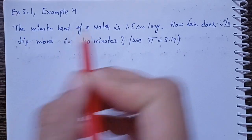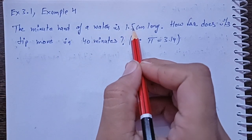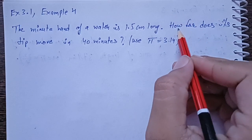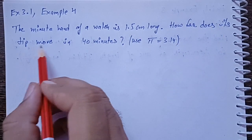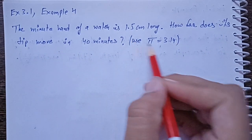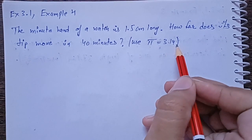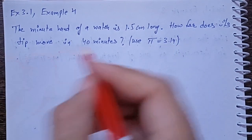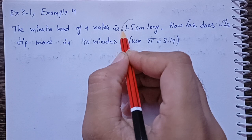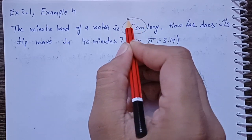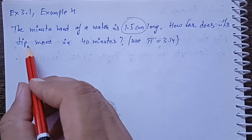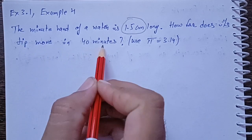The minute hand of a watch is 1.5 cm long. How far does its tip move in 40 minutes? Use pi value is 3.14. We have a watch. The minute hand is 1.5 cm long. How far does it move in 40 minutes?